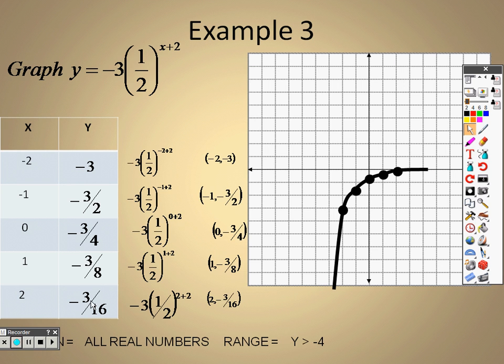So when we're taking a look here, the domain is all real numbers because it's going to touch every single x value. And the range is whenever it is greater than negative 4.